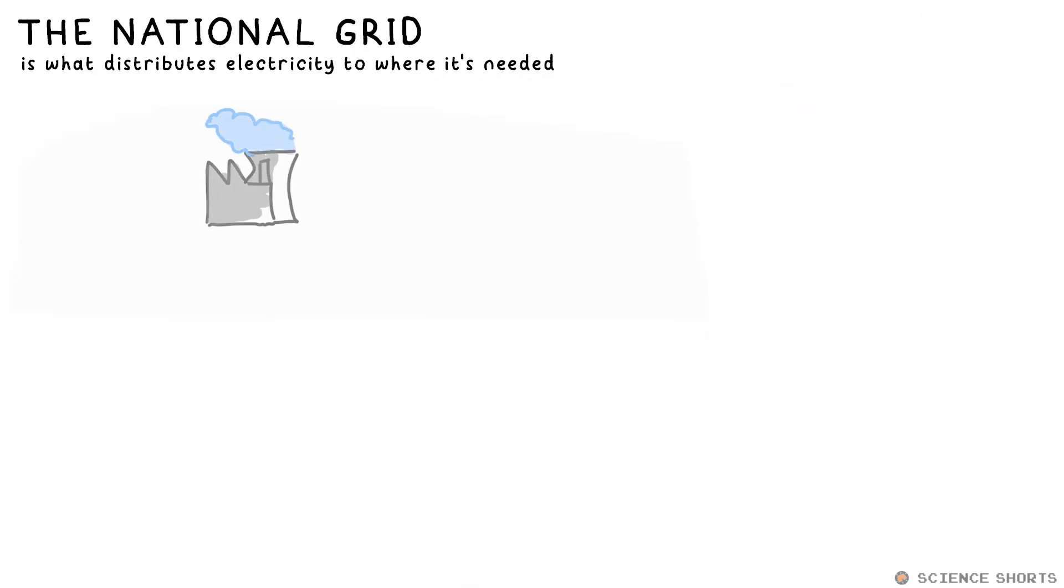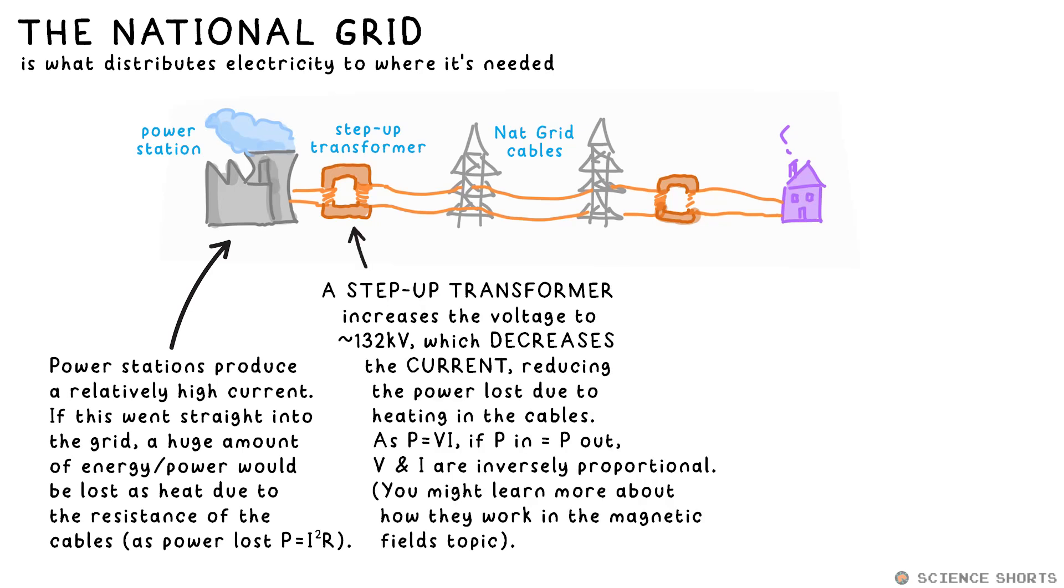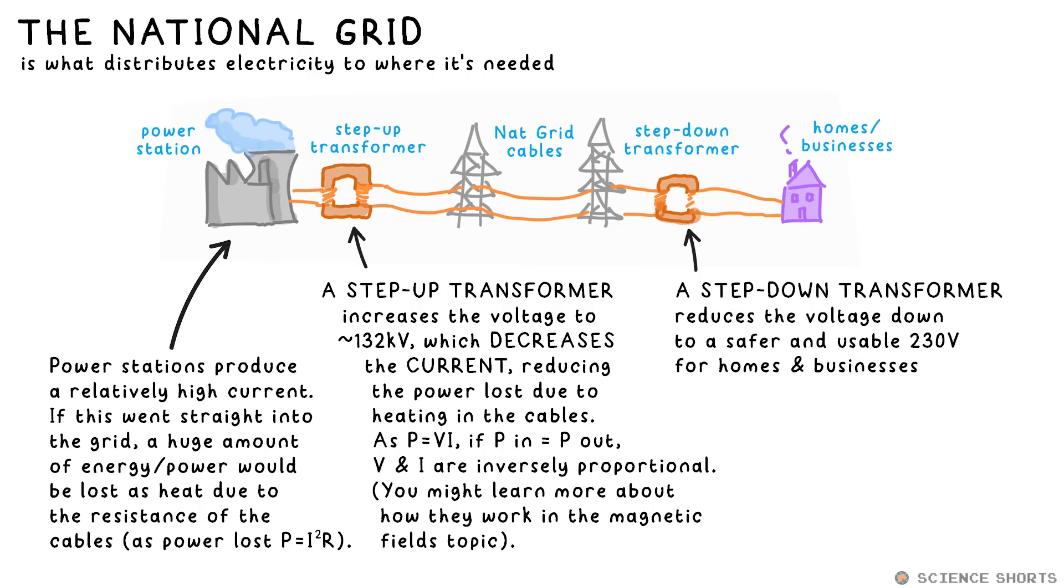Electricity is supplied to homes and businesses by the National Grid, a network of power stations, cables and more that transmitted across the country. The current produced by a power station is so huge that if it went straight into the overhead cables you see above you when you're out and about, a huge amount of energy would be lost as heat due to the resistance of the cables. To reduce the energy lost, transformers are used. A step-up transformer outside the power station increases the transmission voltage to over 100,000 volts. As P equals VI and power stays roughly the same in the process, if PD goes up, current must go down. This decrease in current means less energy and power is lost due to heating. Of course, having such a high voltage going into homes would be dangerous and unnecessary, so we have a step-down transformer nearby to reduce it back down to a safer 230 volts.